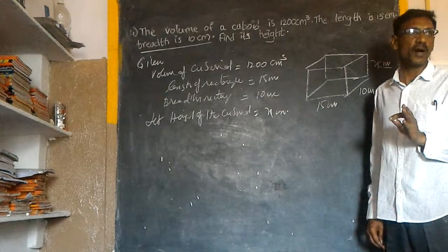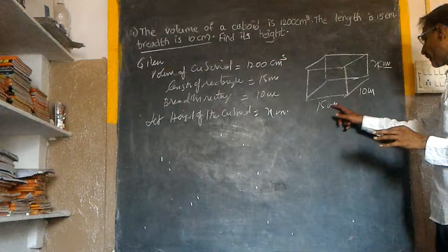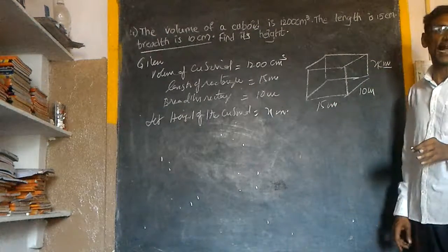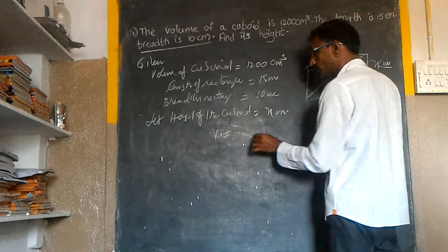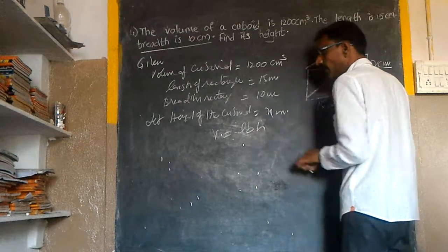We know that volume of a cuboid is equal to length into breadth into height. That is L × B × H. So, volume of cuboid is equal to LBH.